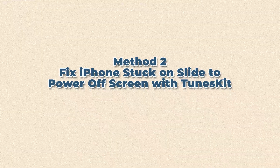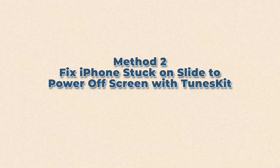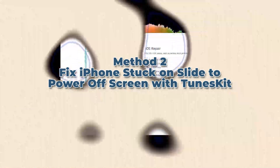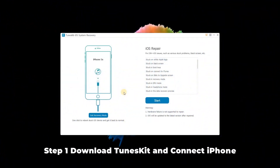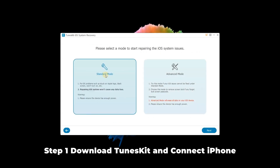Method 2: Fix iPhone stuck on slide to power off screen with TunesKit. Step 1: Download TunesKit and connect iPhone. Download and install TunesKit iOS system recovery software on your computer and open it. Then connect your iPhone to the PC. Click the enter recovery mode button first and then the start button. To fix iPhone frozen on slide to power off screen, you are supposed to choose the standard mode, then tap on the next button.